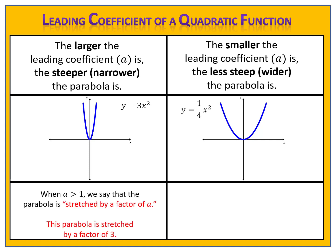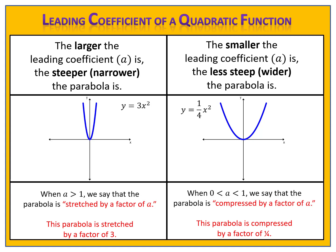When a is larger than 1, the parabola is stretched by a factor of a — a is whatever that leading coefficient is. So in the case of y equals 3x squared, we say the parabola is stretched by a factor of 3. When a is between 0 and 1, we say that the parabola is compressed by a factor of a. In this case, y equals one-fourth x squared, the parabola is compressed by a factor of one-fourth. This is a great time to pause the video to make this table in your notes. Please pause the video here.